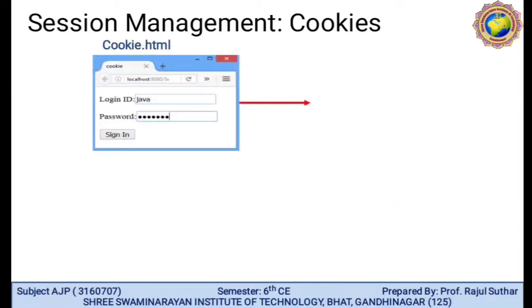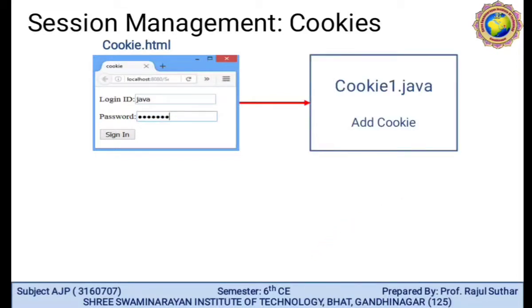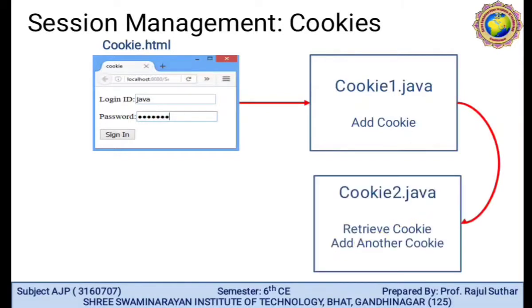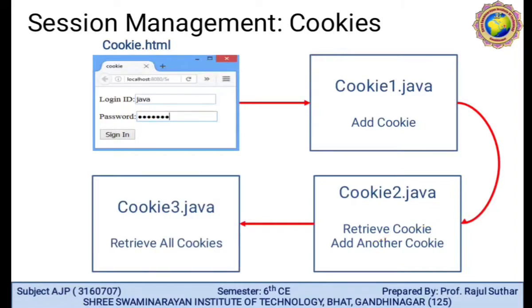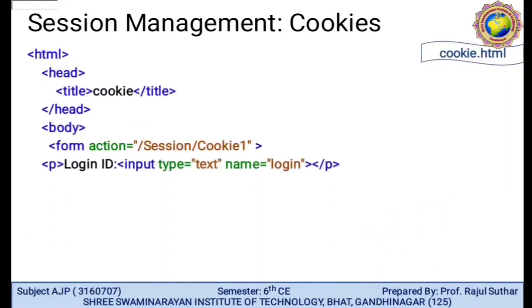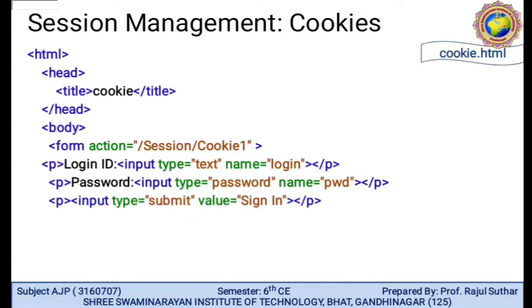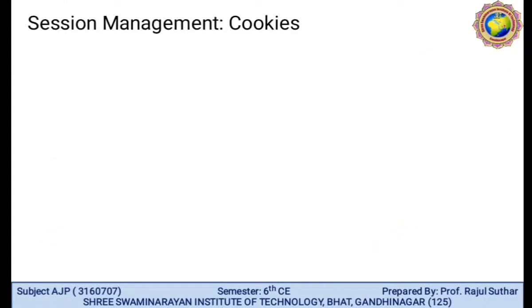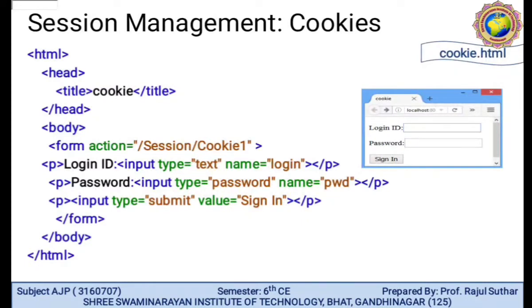The cookies.html file is created. In the file, the login ID is 'java' and the password is 'servlet'. By clicking the sign in button, we retrieve cookie1.java where one cookie is added. A second cookie is added in another step, and in the third we retrieve all the cookies via cookies3.java. The HTML form uses action /session/cookie_one with a login name text field, a password type field, and a submit button.